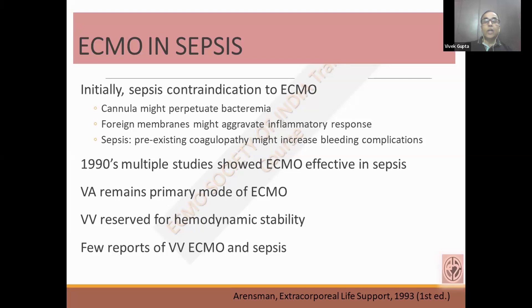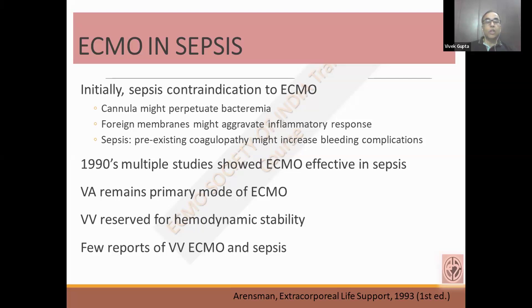Because the oxygenator is a foreign body membrane and there is plastic tubing — these are foreign membranes which increase the inflammatory response and that can worsen vasodilatory shock. Moreover, on one end we are using anticoagulation during the ECMO run, and pre-existing coagulopathy can possibly increase a lot of bleeding complications and other issues. But by the end of the 1990s, several studies started showing that ECMO can be beneficial in certain subsets of patients with sepsis.